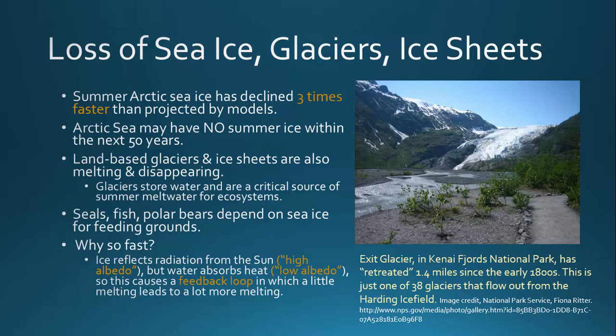This is important to note, because it's a source of misconceptions for many students. When sea ice melts, it does not change sea levels. However, when glaciers and ice sheets that are on land melt, that water moves from land into the ocean, and that leads to sea level rise.